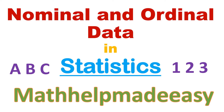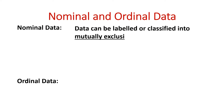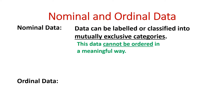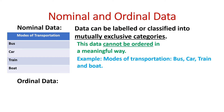Nominal and ordinal data in statistics. For nominal data, the data can be labeled or classified into mutually exclusive categories. This data cannot be ordered in any meaningful way. Examples of this might be modes of transportation like bus, car, train, and boat.